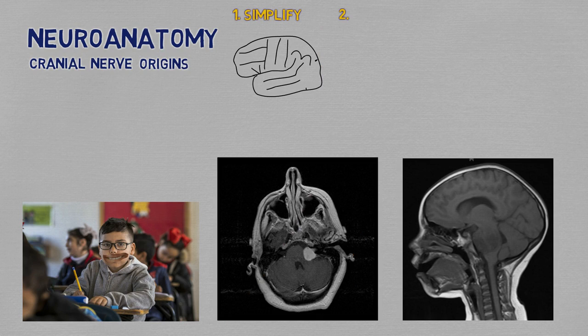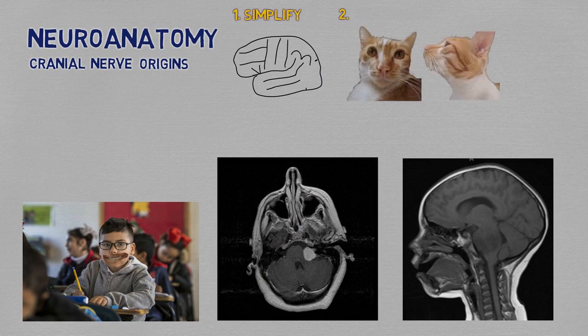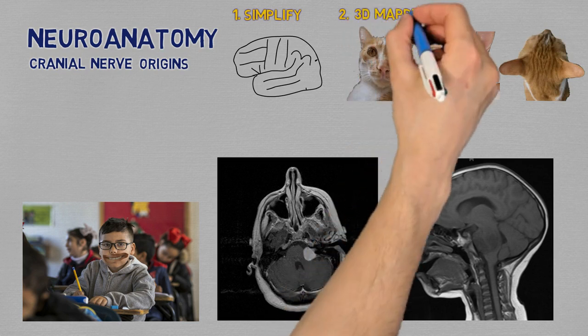We're going to be looking at the nerves from three different angles at the same time: anterior, sideways in a midline cut, and from top to bottom. I think this will facilitate your 3D mapping of what you're seeing.